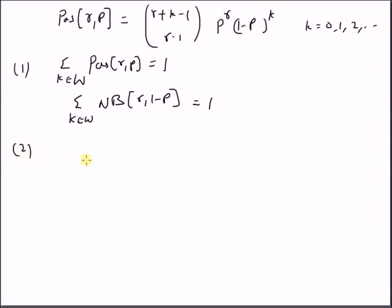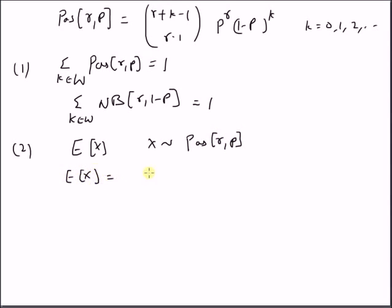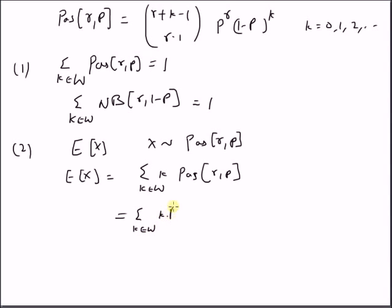The second property is to determine the expectation of the Pascal distribution. We want to find the expectation of the random variable x, where x follows a Pascal distribution with parameters r and p. The expectation of x equals the summation over k of k times the Pascal distribution P(r, p), which equals the summation over k of k times the negative binomial distribution with parameters r and 1 minus p.